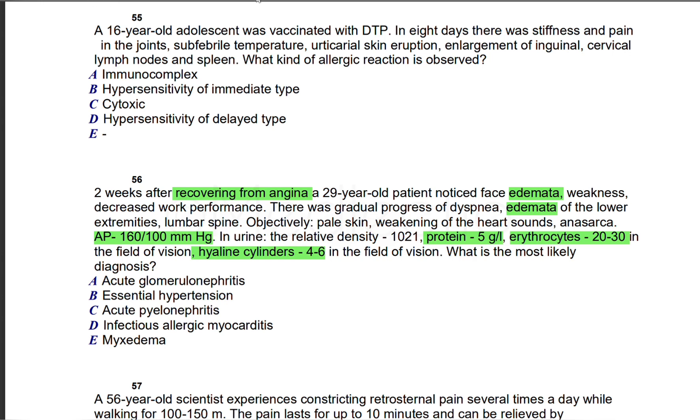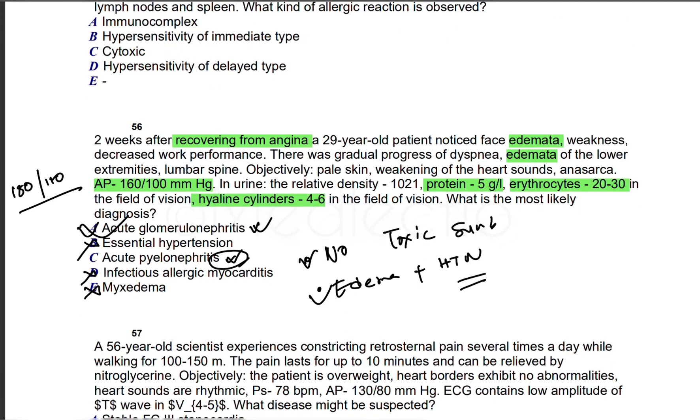We've discussed these questions before. Recovering from angina, and we have edema and hypertension—these terms are important. Myxedema is not our option because there's nothing to do with thyroid. Infectious allergic myocarditis—no hint of infection, no toxic syndrome. Left with three options. Essential hypertension is not our answer because if we see hypertension with kidney problem, we get hypertensive emergency, which is above 180/110. Acute glomerulonephritis and acute pyelonephritis—we've discussed these two. In acute pyelonephritis, we would have toxic syndrome. Here we have edema plus hypertension, which fit with acute glomerulonephritis. Our answer is acute glomerulonephritis.